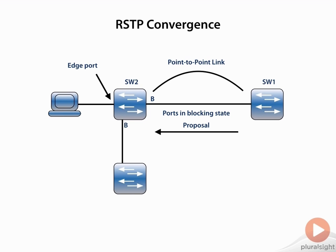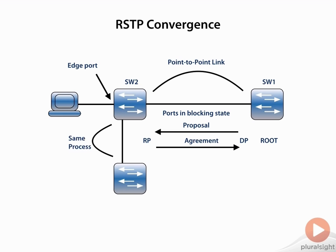If Switch 2 agrees — meaning Switch 1 has the lowest bridge ID — then the port on Switch 2 becomes the root port and it sends an agreement back. Switch 1 then marks its port as a designated port, and the root port on Switch 2 transitions to a forwarding state. Switch 2 then goes through the exact same process with the other switch in this topology. Switch 1 and Switch 2 are now communicating and have converged their ports. That's a high-level overview of how Rapid Spanning Tree converges.